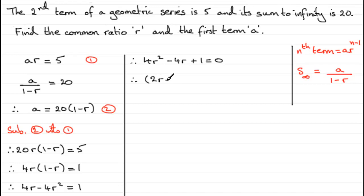It comes out as 2r minus 1 times another 2r minus 1 equals 0. So we've got a repeated factor here of 2r minus 1. So that means that this factor 2r minus 1 must be equal to 0. And if I add 1 to both sides, 2r would equal 1. And then divide by 2. I'd get that r equals a half. So that common ratio is going to be a half.